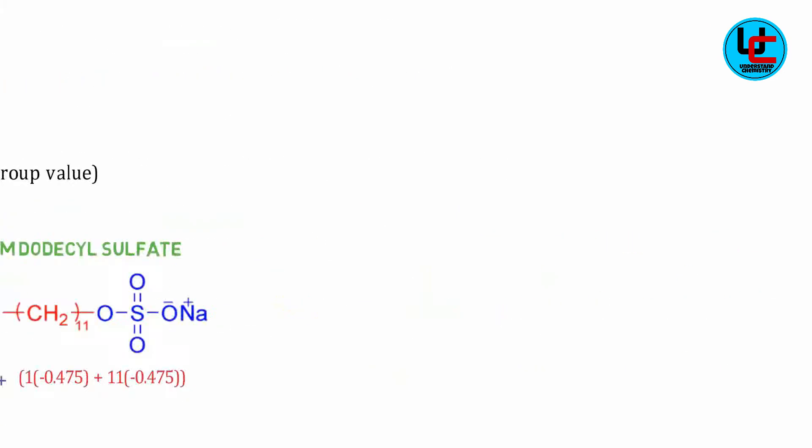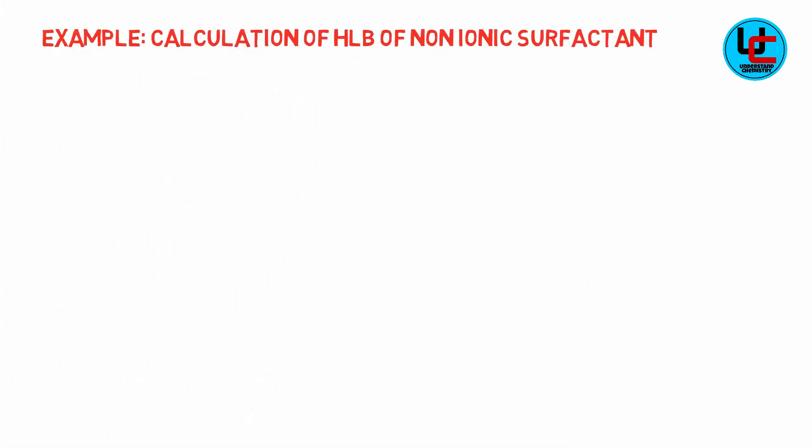Now let us see how this method works for non-ionic surfactant. For this, consider polyoxyethylene 10 nonyl phenyl ether, where a small chain of polyoxyethylene is attached to 9 carbon alkyl chain through phenyl group.